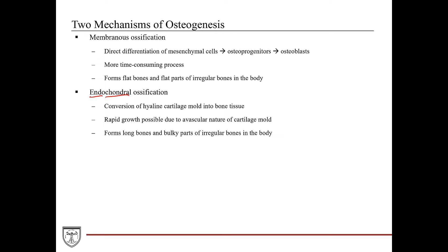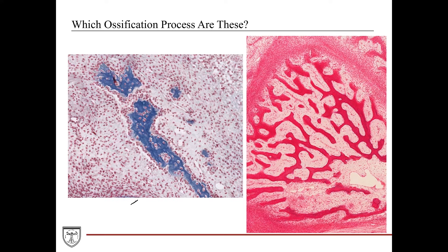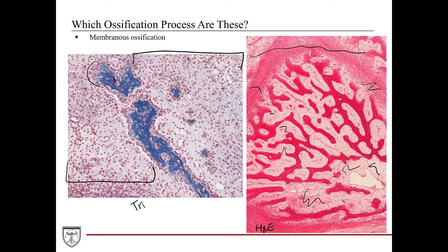With these two osteogenesis processes in mind, which ossification process are these two images depicting? This is the trichrome staining, and this is H&E. If you've guessed membranous ossification for both images, you'd be correct. This is the mesenchymal tissue out here — these are the embryonic loose connective tissue. A lot of these areas are all mesenchymal tissues. Where we see a lot of these blue structures, these are all newly forming bone tissues in small islands. The bone tissue matrix looks blue due to the collagen fibers depositing here, which attracts the blue of the trichrome stain. Surrounding this bony matrix, we have a lot of these tall to cuboidal cells — these are all osteoblasts. And within these lacunae, we have the osteocytes that are trapped in there.